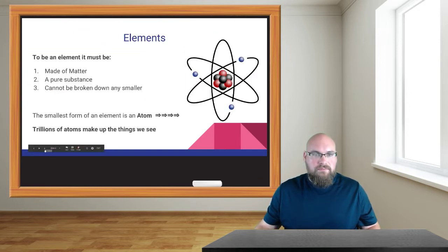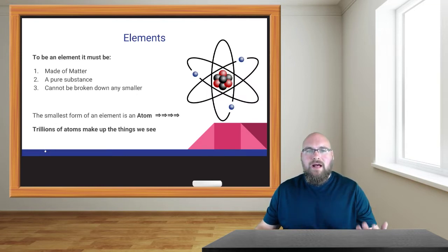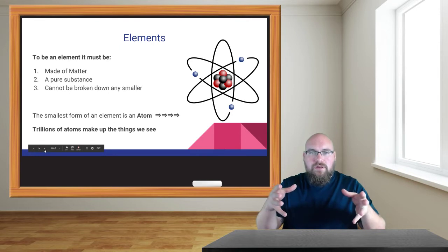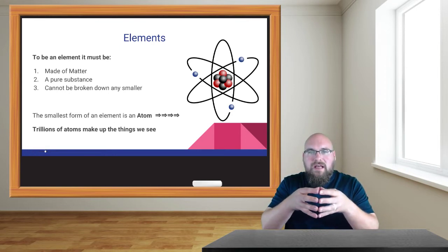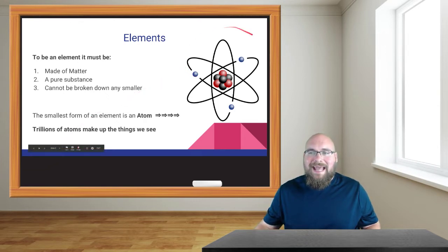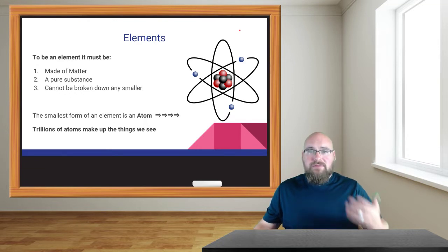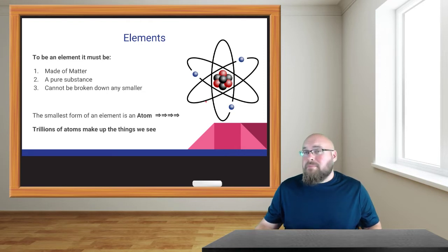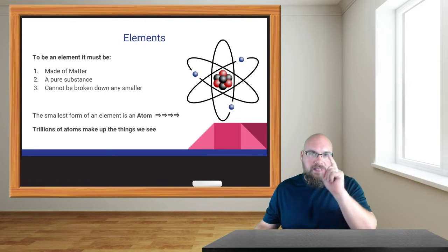Now let's talk about what elements are. An element must be made of matter, it must be a pure substance, and it cannot be broken down into any smaller divisions. The smallest form an element can take is an atom. This picture shows what an atom looks like. Everything you experience — air, water, yourself, your desk — is made up of atoms. The only place we do not find atoms is in outer space between planets and stars. These atoms are super tiny; we have no instruments that can actually see one, but trillions of them make up who you are.